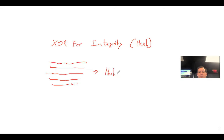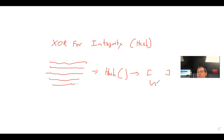So the hash function is going to give you basically a sequence - a short, fixed-length hash value - which is going to be a sequence of zeros and ones. Let's think of just one algorithm that we can have for this.